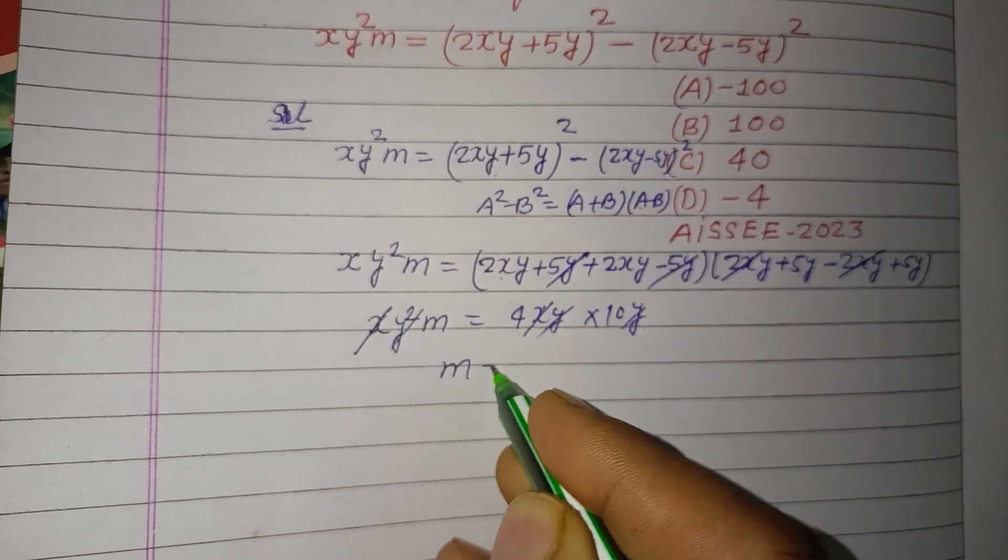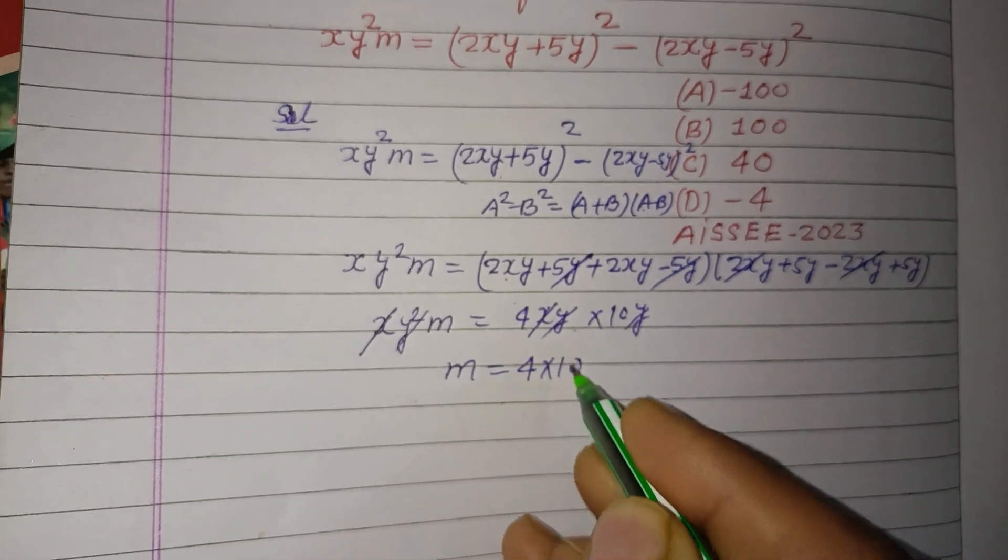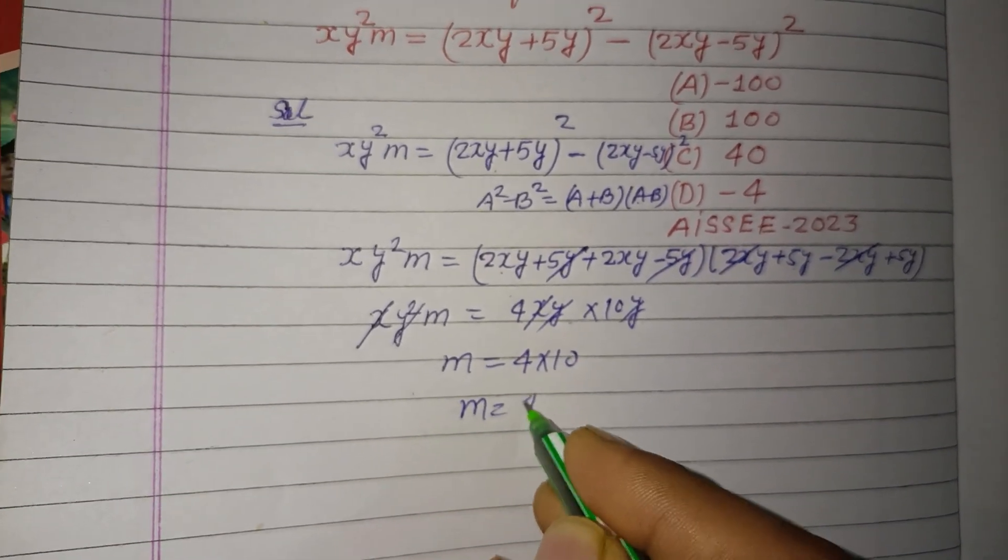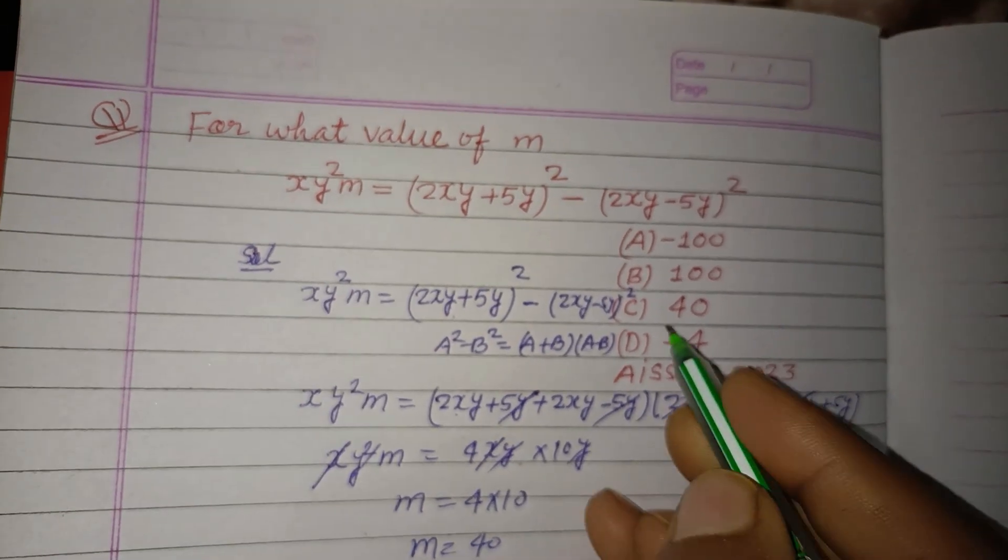So from here x, x cancel and y into y, y square cancel. Therefore m equals 4 into 10, so m equals 40.